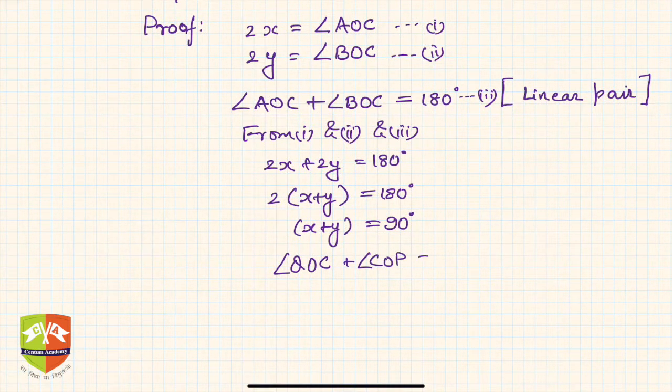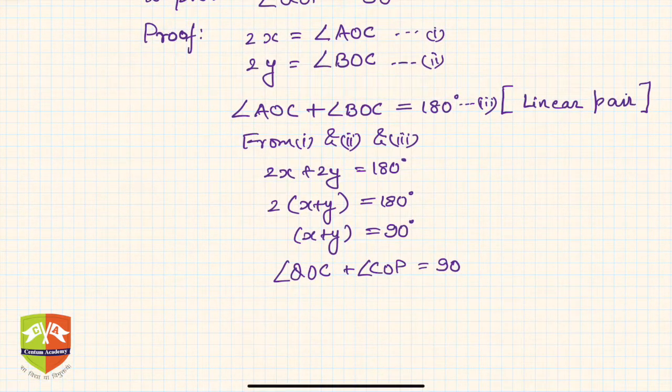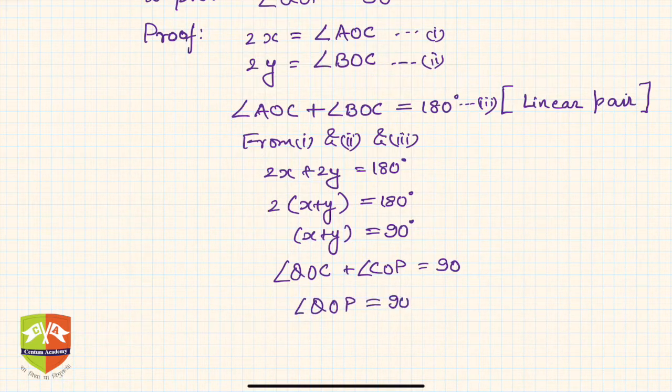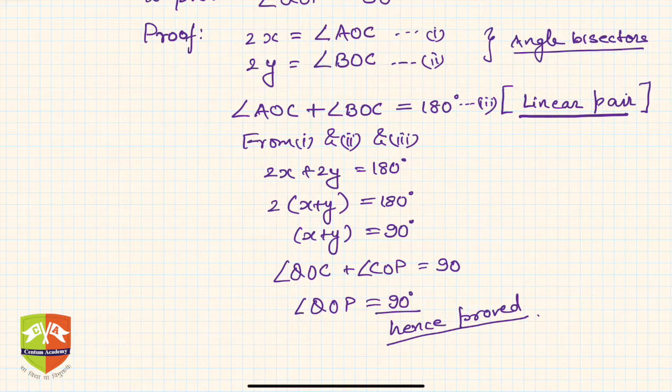Since angle QOC plus angle COP equals 90 degrees, and QOC and COP together form angle QOP, therefore angle QOP = 90 degrees. Hence proved! This was our objective. In this problem, we used the concept of linear pairs and angle bisectors.